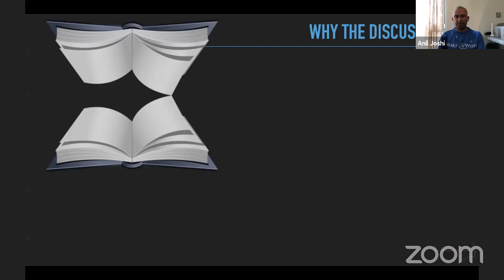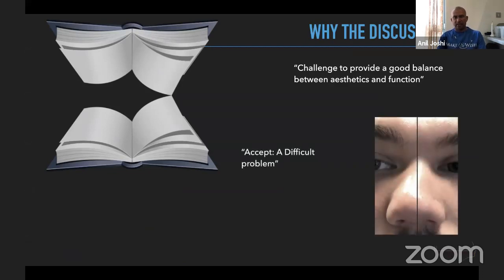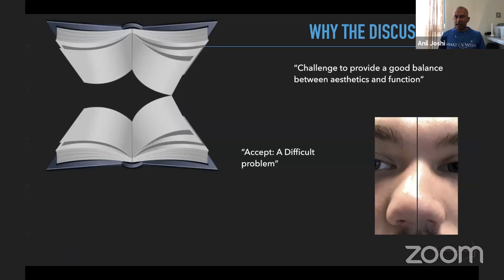Why are we discussing this? It is a challenge to provide a good balance between aesthetics and function. We have to know what functions are and what aesthetics are, and marrying these things together is the key for any doctor or surgeon. The difficulty — as you can see in this case for example — is that the patient has such a severe deviated dorsum and septum. We really have to accept that these are difficult problems and go to ground level, understanding the concepts before we jump into any surgical interventions.